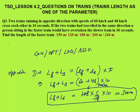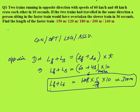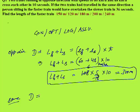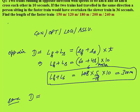The second statement says that if the two trains had travelled in the same direction, a person sitting in the faster train would have overtaken the slower train in 36 seconds. The distance travelled by that person to overtake the slower train is equal to the length of the slower train. Speed in the same direction is the relative speed: speed of faster minus speed of slower, multiplied by time of 36 seconds.